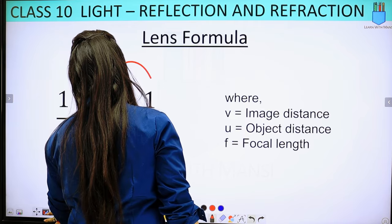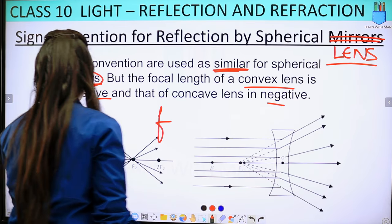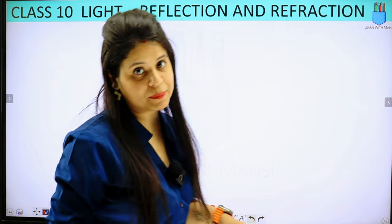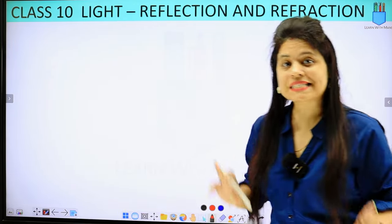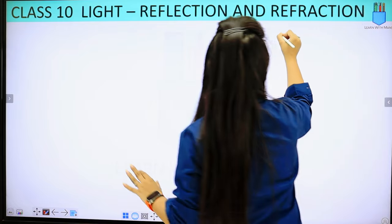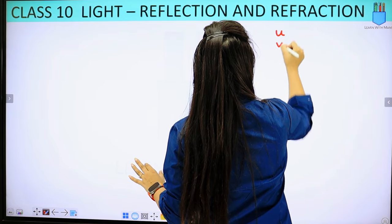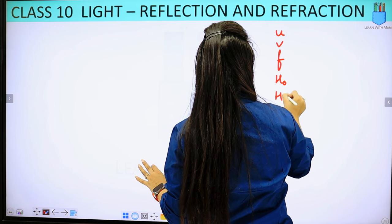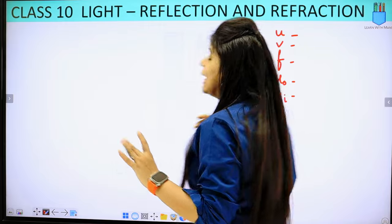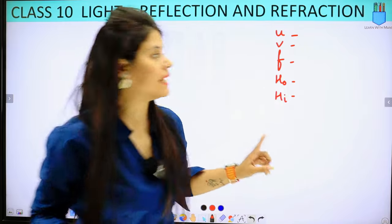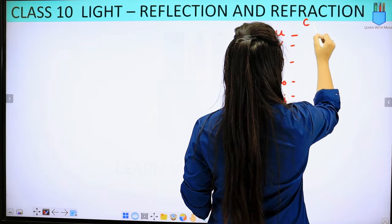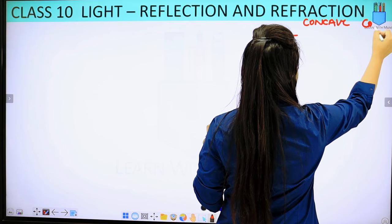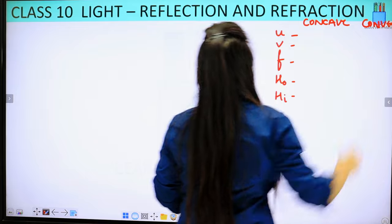The signs are the same, but I want to clarify for anyone who is confused. We need to discuss the variables: u, v, f, height of object, and height of image. We have to see these for both the concave lens and the convex lens.